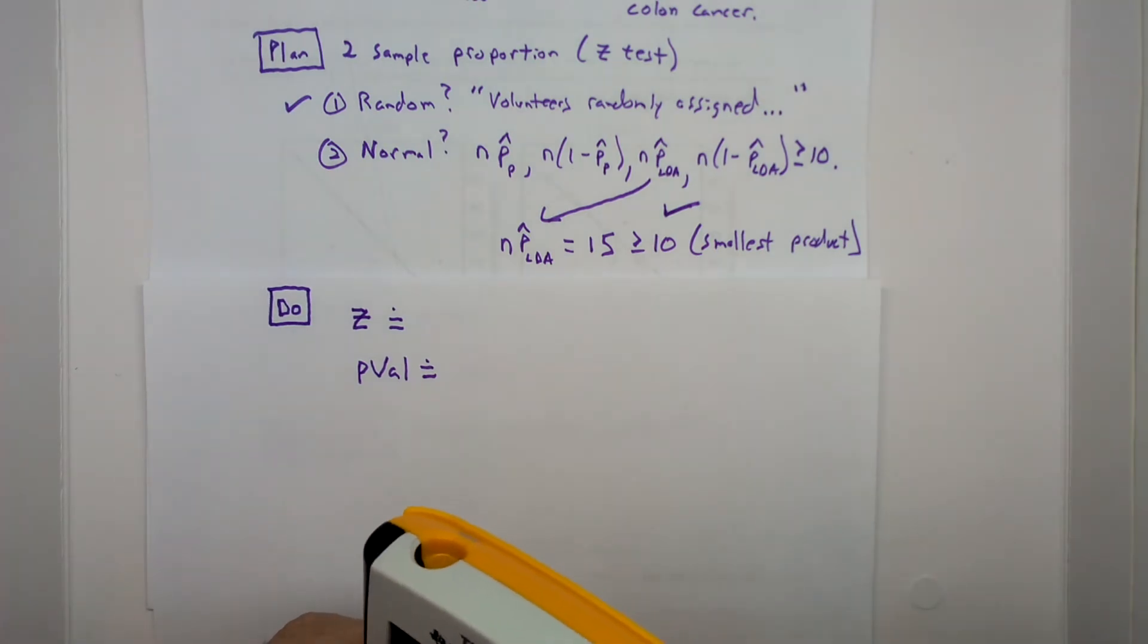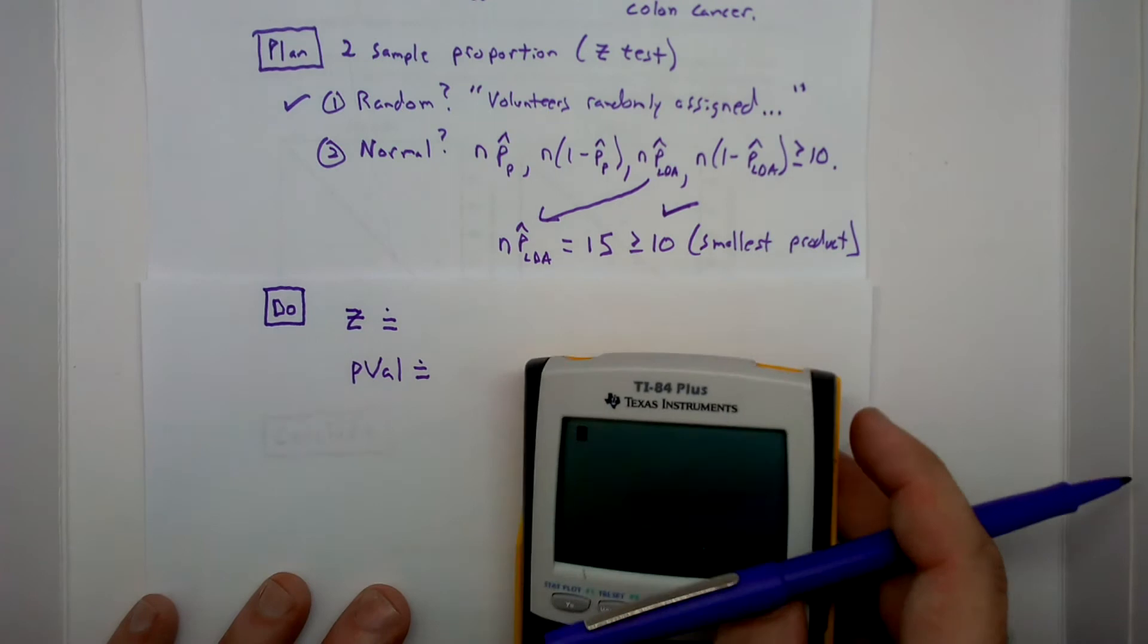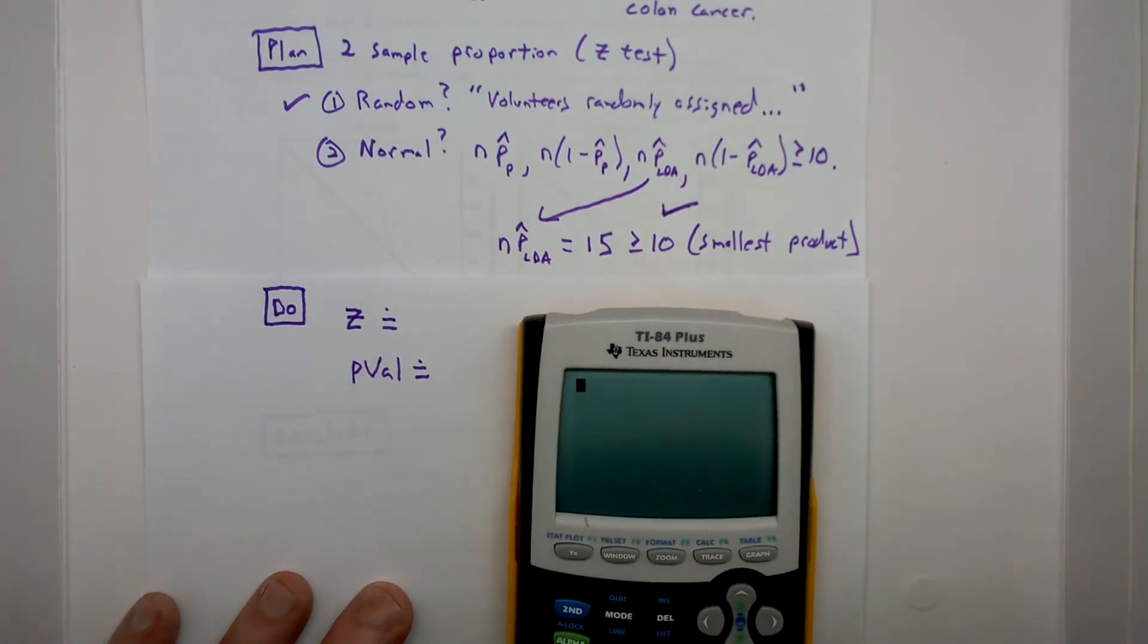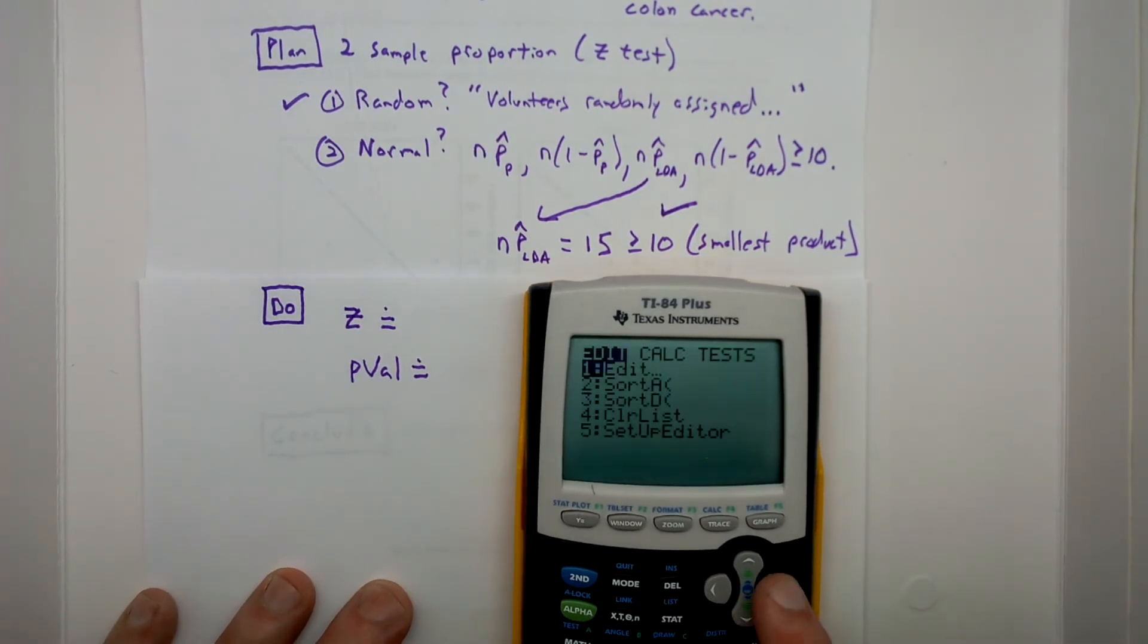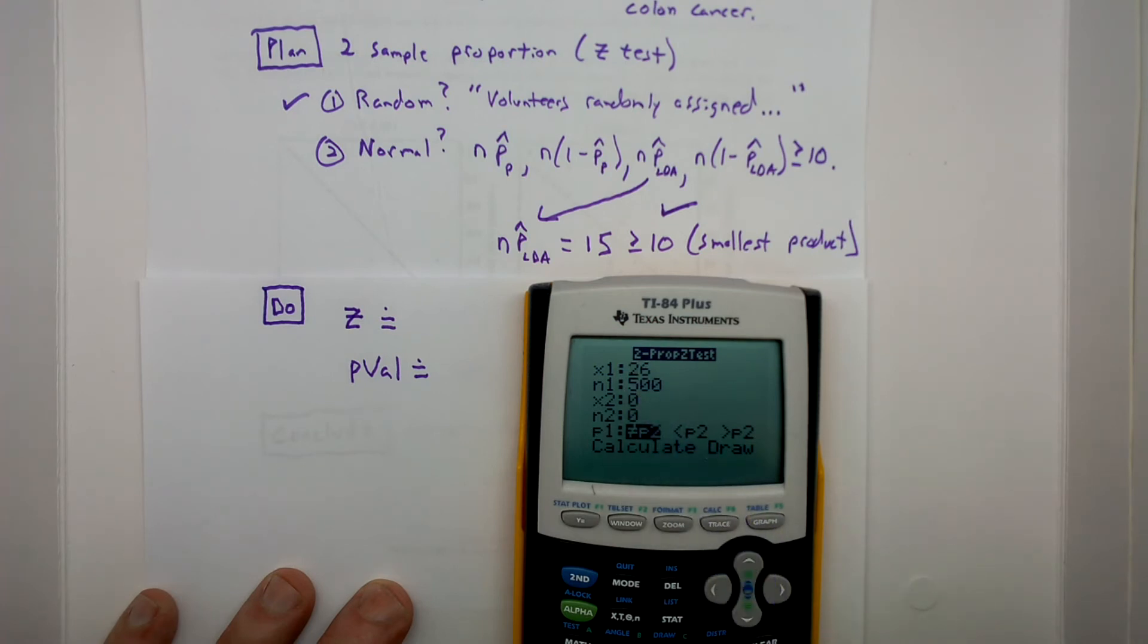Going into our calculator. Tests. Two proportion Z-test. X1 is our number of successes. That is, in our placebo group, how many contracted colon cancer. N1, 500. That's half of our total group of 1,000. X2, our number of successes in our low-dose aspirin group. And likewise, 500 in here.